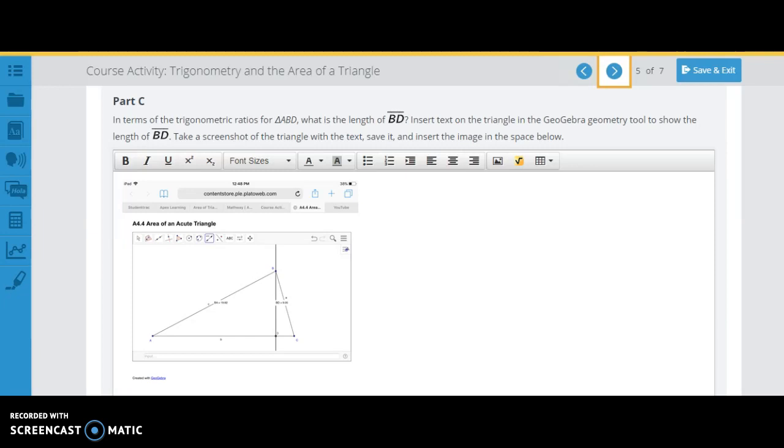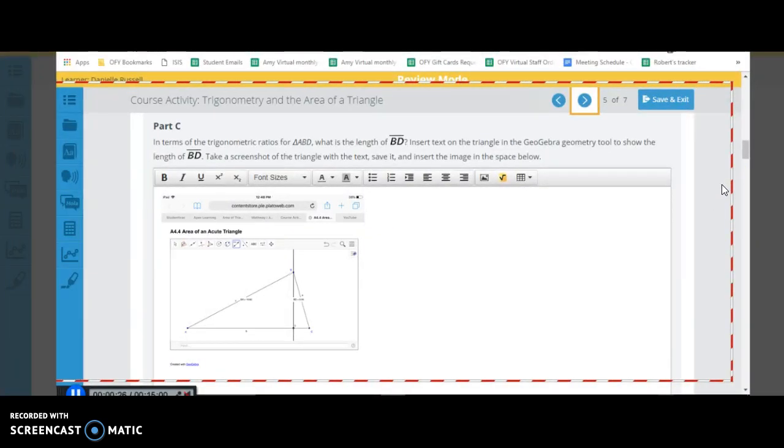What we care about is it says here in terms of the trigonometric ratios of A, B, and D, what is the length of BD. So I'm going to draw this triangle out a little bigger so we can see.